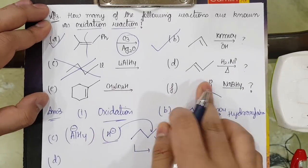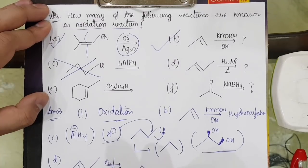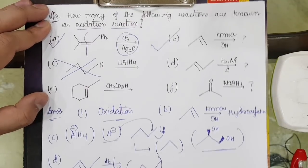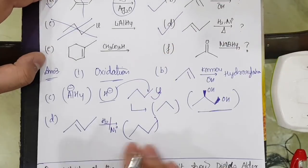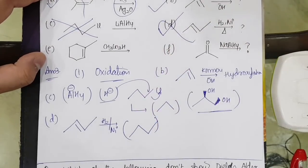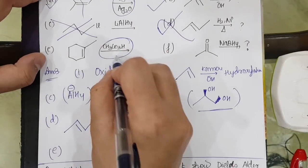Because addition of hydrogen is known as reduction. So this is reduction. In number D, what is happening? H2 Ni. Addition of hydrogen is known as reduction. So here I will add hydrogen. That will give me the formation of alkane. The alkane that is forming is a reduced form of alkene. So this is also reduction which is happening.